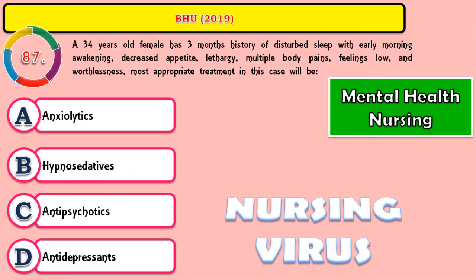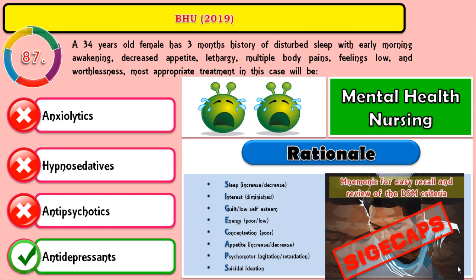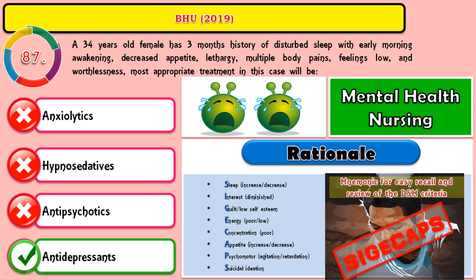Question 87: A 34-year-old female has a 3-month history of disturbed sleep with early morning awakening, decreased appetite, lethargy, multiple body pain, and feelings of low mood and worthlessness. The most appropriate treatment for this case would be? If you look at all the symptoms, they belong to a depressive episode. All symptoms given here belong to depressive disorder, so antidepressant is the primary drug of choice for this case.